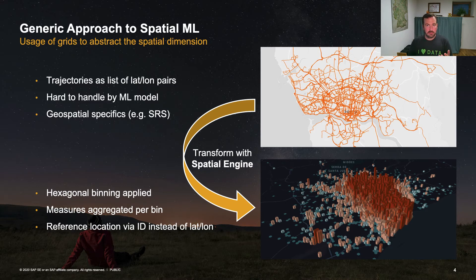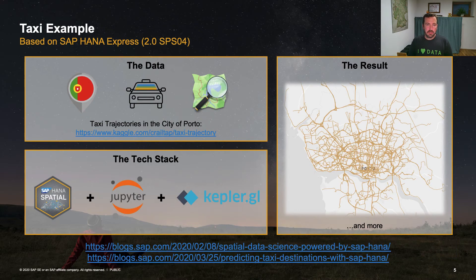When I apply that hexagonal binning, I can aggregate all measures per bin — I can count the number of taxi pickups. I can also reference each location in the city by a simple ID, which in itself is not geospatial data anymore. The ID would be, for example, hexagon cell 4711. This is a reference to one location in the city of Porto, but for the machine learning model it appears as categorical data instead of geospatial data. The dataset is available on Kaggle — it consists of taxi trajectory data from 2013–2014. I built a demo using SAP HANA Spatial, Jupyter Notebooks, and Kepler GL for visualization.